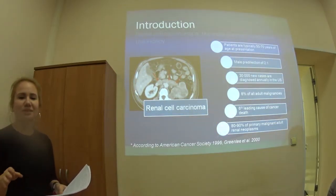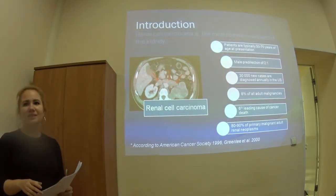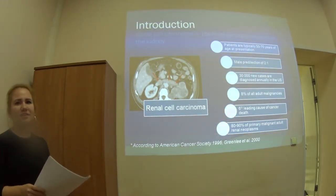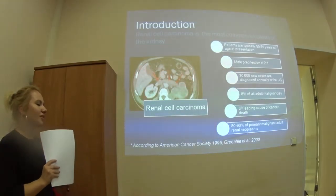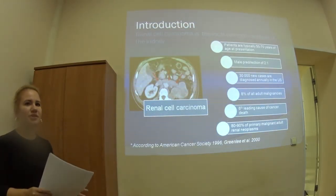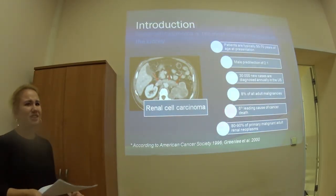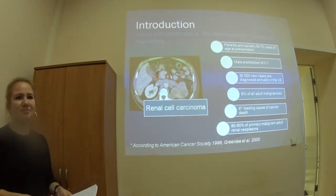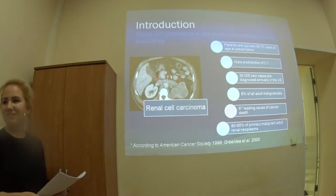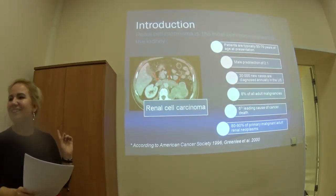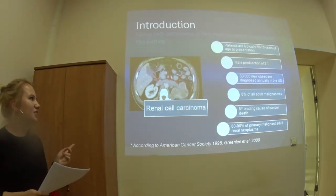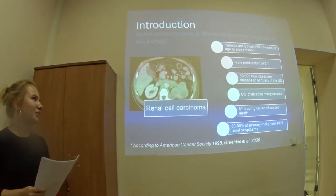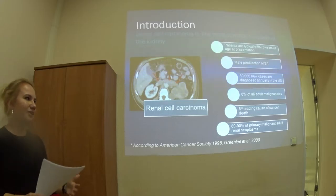Let me also say some words about therapy. Radical nephrectomy is the method of choice, but there are really many different surgical methods such as cryoablation, resection, and others. So it's not the only way — it depends on the particular patient and on the stage, because stage is the main factor we look at when planning therapy.